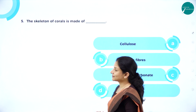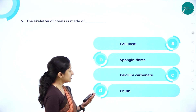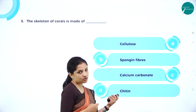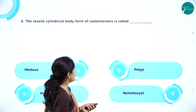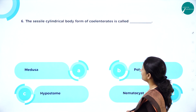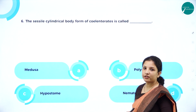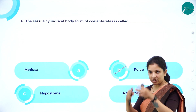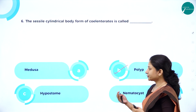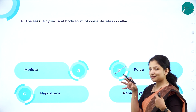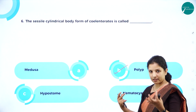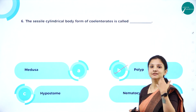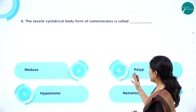Next: The skeleton of corals is made of — is it cellulose, spongine fibers, calcium carbonate, or chitin? Cellulose is found in plants. Spongine fibers are seen in porifera or sponges. Chitin is also incorrect. The answer is calcium carbonate. Next: The sessile cylindrical body form of coelenterates is called — medusa? No, medusa is umbrella-shaped and free-living. Hypostome? No, that is the mouth opening. Nematocyst? No, those are defensive cells. The correct answer is polyp — cylindrical in shape and sessile.